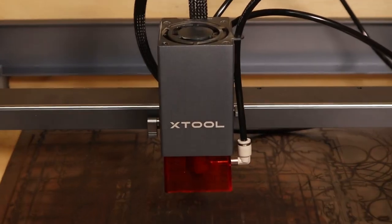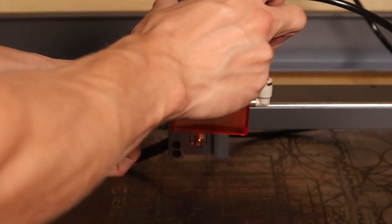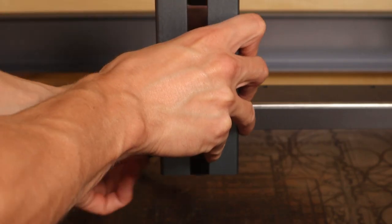To start engraving, just replace the existing module on your Xtool D1 with the infrared one and you are good to go.